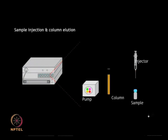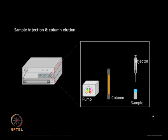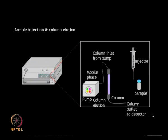The sample injector system may be automatic or manual. The automatic sample injector uses a syringe to inject the sample, which is placed in a vial, directly into the column. Once the sample is injected, mobile phase flows into the column through the pump. The column consists of a stationary matrix that preferentially binds certain analytes. The outlet from the column enters the flow cell, where it can be detected.